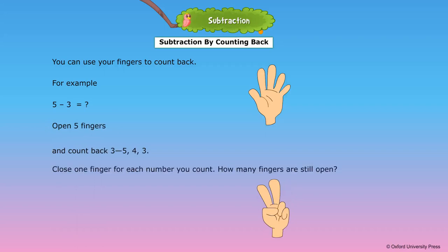Close one finger for each number you count. How many fingers are still open? 2 fingers are still open. So, 5 minus 3 is equal to 2.